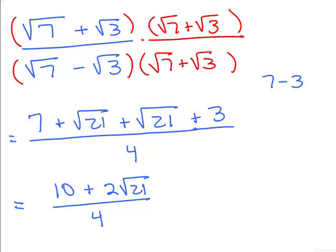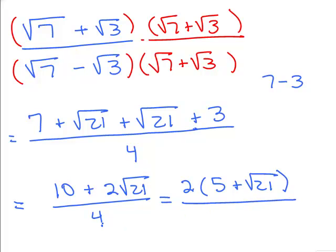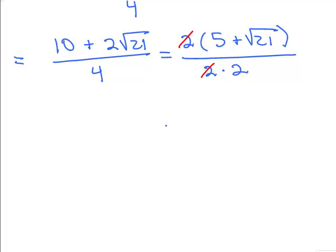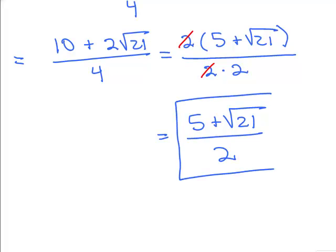To simplify further, factor to see if you can cancel. Out of the numerator you can factor out a 2, getting 5 plus square root of 21, and write 4 as 2 times 2 so you can see the canceling easily. The final answer is 5 plus square root of 21 all over 2. You're incorporating a lot of ideas: multiplying by the conjugate, multiplying with square roots, adding and subtracting square roots, factoring, and canceling.